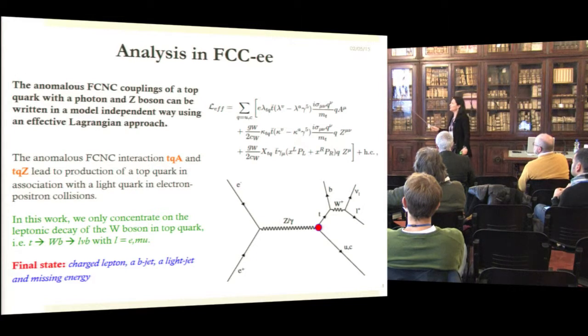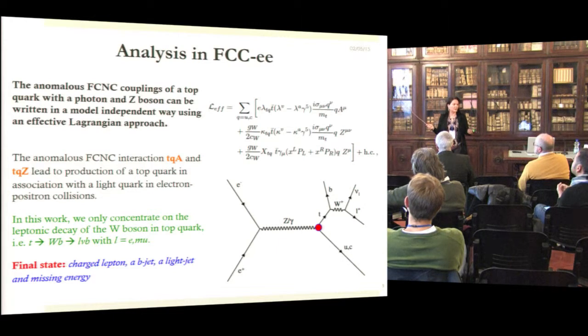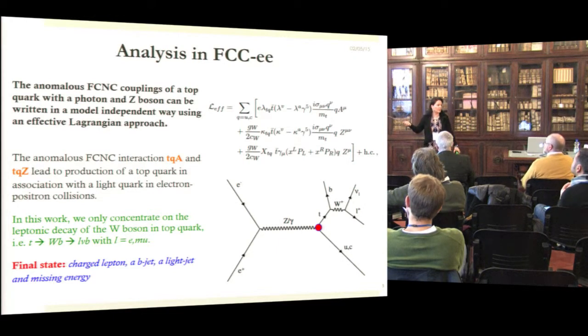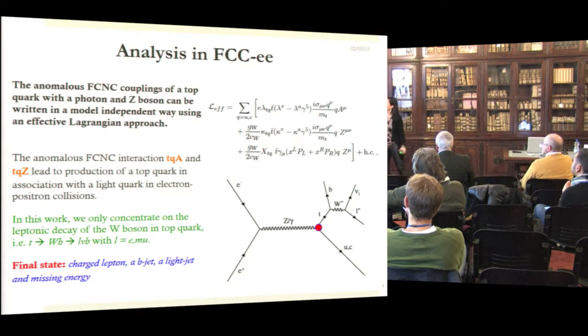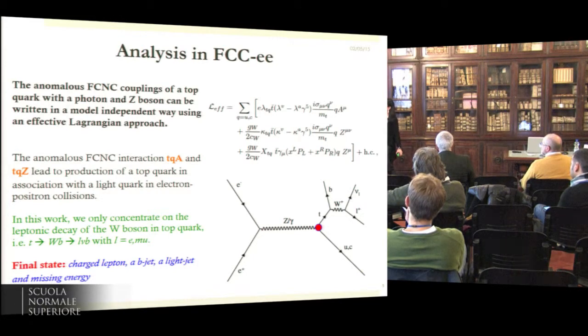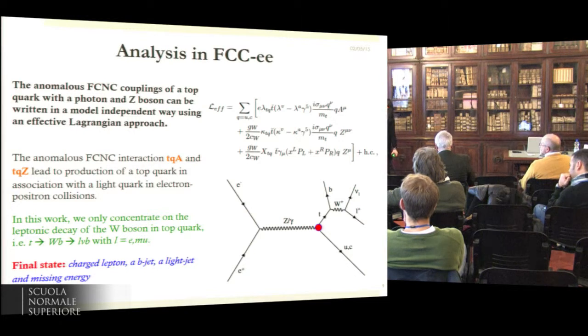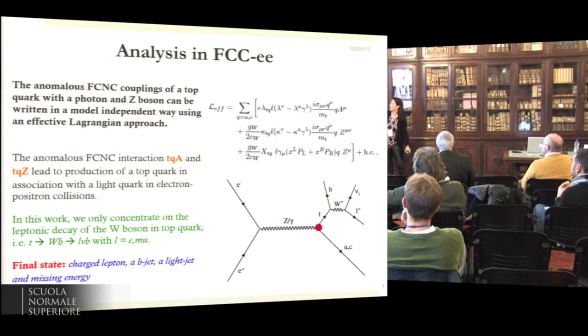The interesting process that we looked at—usually these analyses are done at hadron colliders looking at the decay vertex of a TT bar production in general. Here it becomes very interesting to profit from the anomalous vertex of the TZ or gamma Q and profit from the center of mass energy of the Higgs run, having this kind of diagram where we have a single top in the final state accompanied by a quark that could be either a U or a charm.